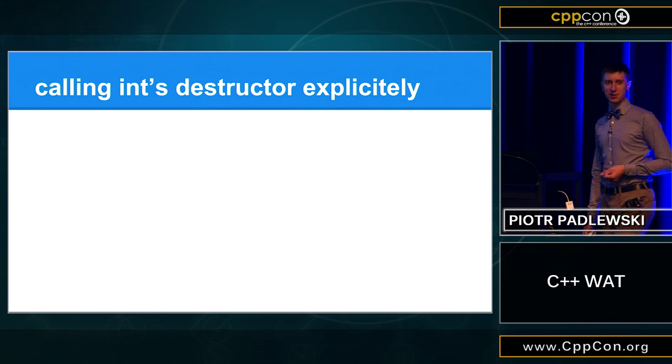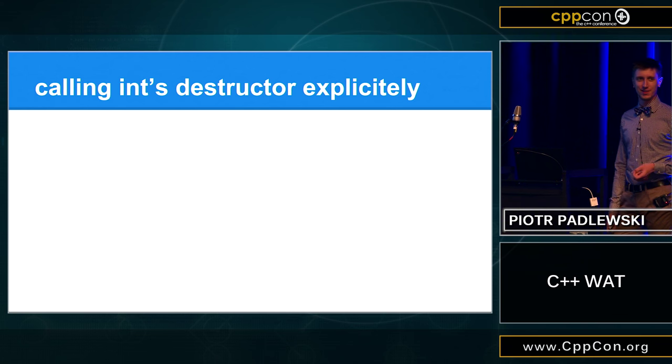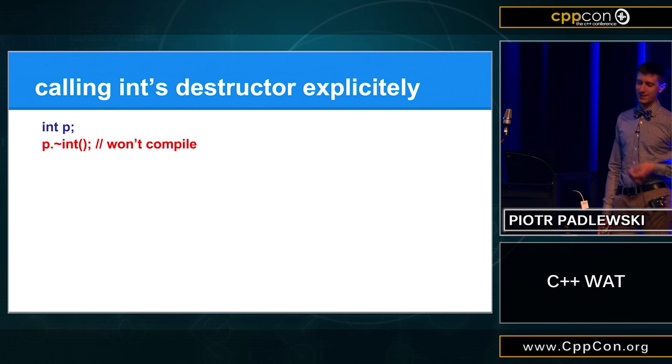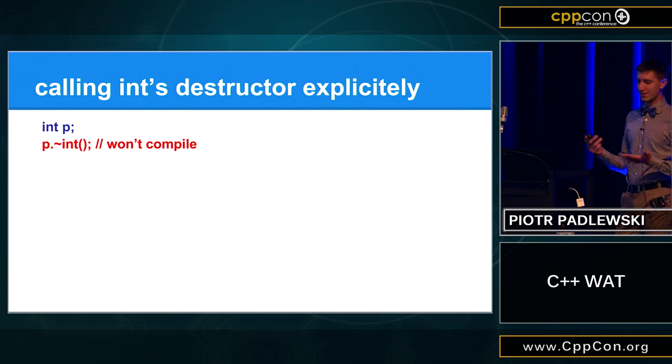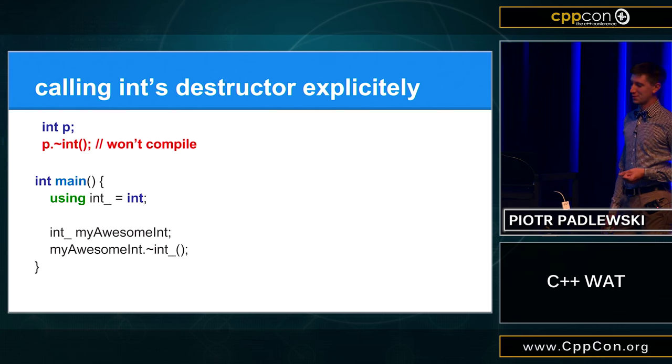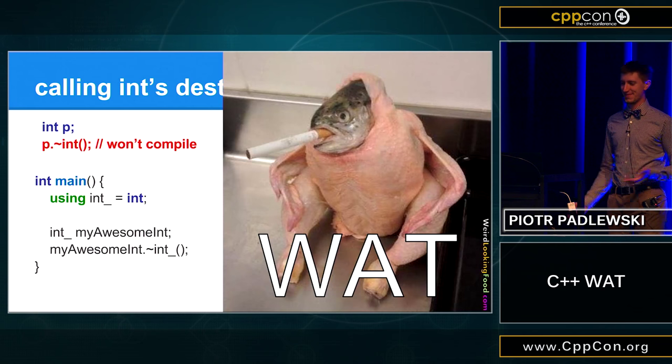Okay. Does anyone know how to call destructor explicitly? Nobody. Okay. So, of course, you cannot do something like this, right? Because it won't compile. The integer is type of d, so it doesn't have any member functions. But, in fact, you can do something like this. So, as you can see, we are using using. And then we can call destructor on it. And this is totally fine. What?